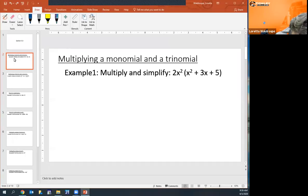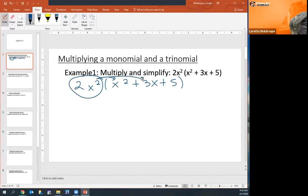When I multiply 2x squared times x squared plus 3x plus 5, I'm taking the 2x squared times each term in the parentheses. So 2x squared times x squared, well 2 times 1 is 2, and adding the exponents, I have x to the fourth.